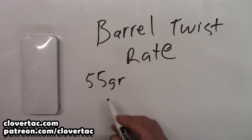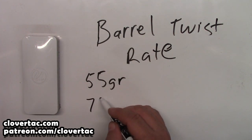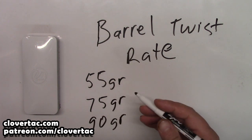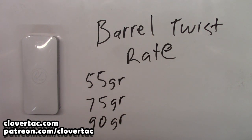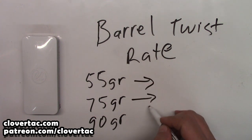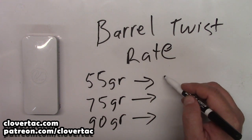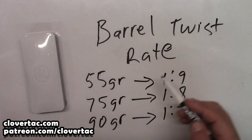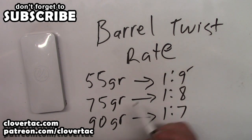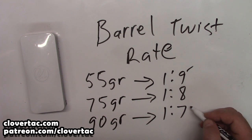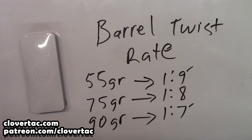Now you may ask why are there varying twist rates? That's because the weight of the projectile is going to help determine what twist better stabilizes that projectile. Typically speaking, the lighter the projectile, the slower the twist you can get by with. So with a 55 grain, you can likely stabilize that with a one-in-nine twist, whereas if you ramp it up to a 90 grain projectile, then it could require a one-in-seven twist.